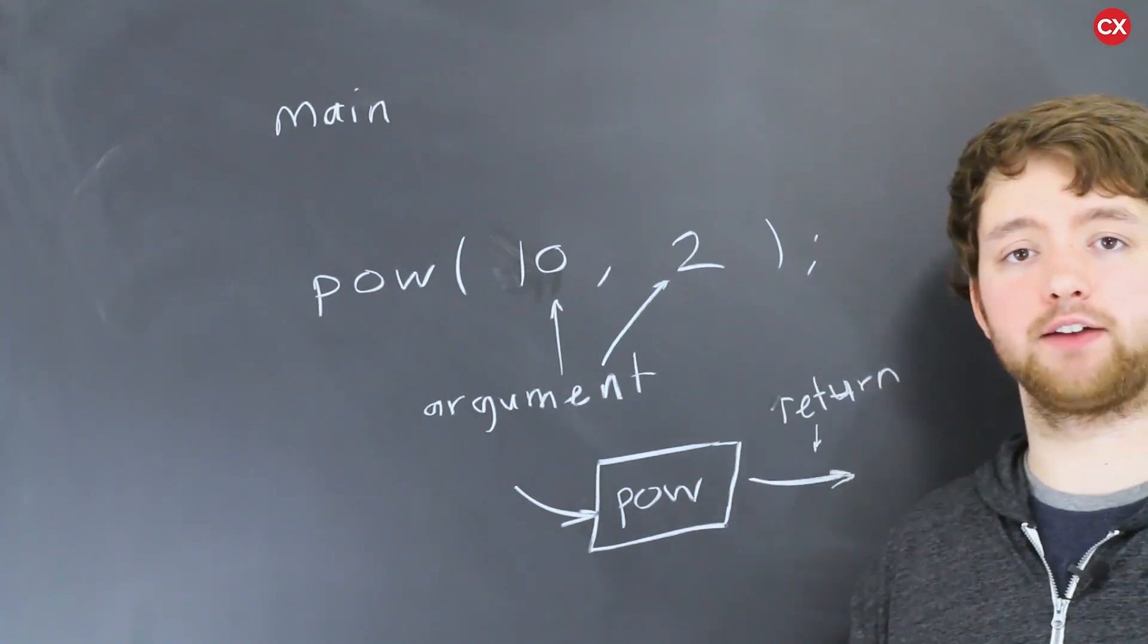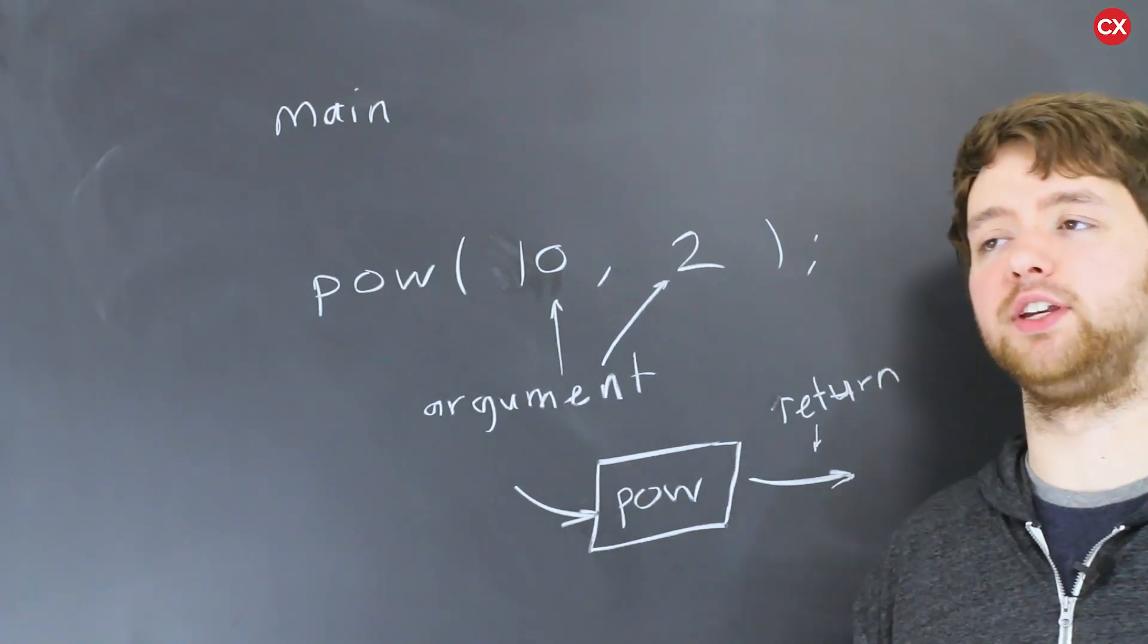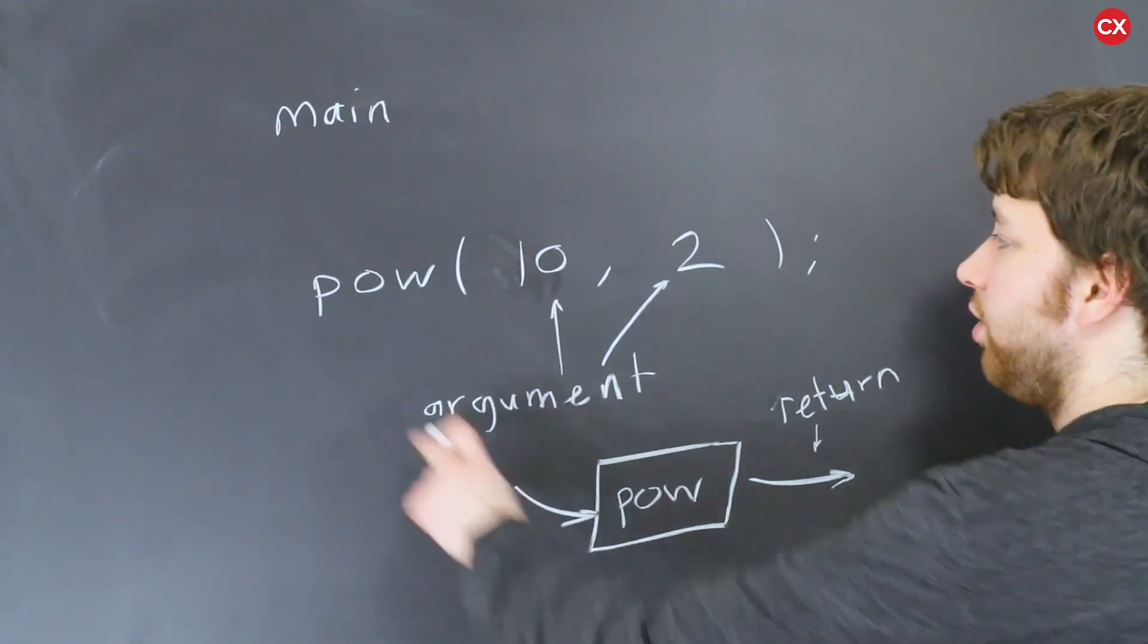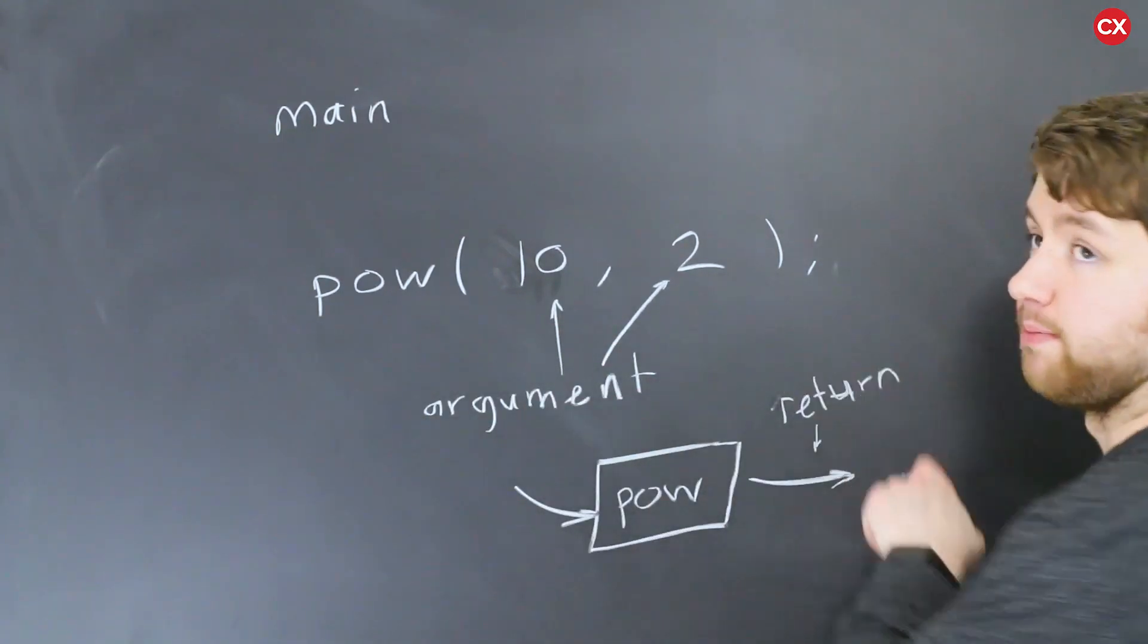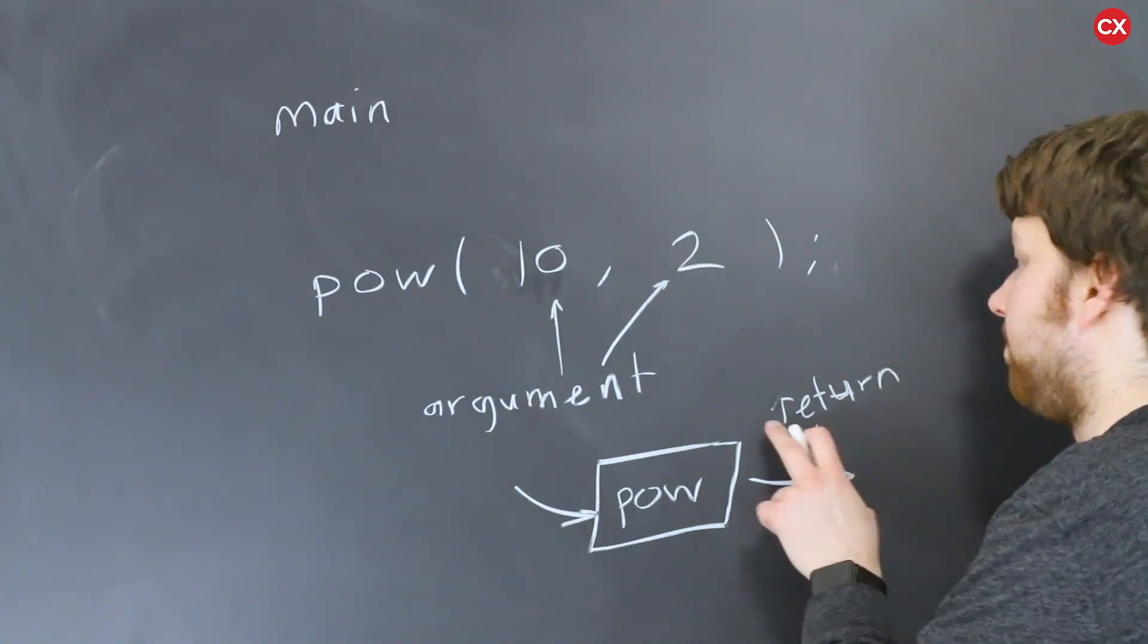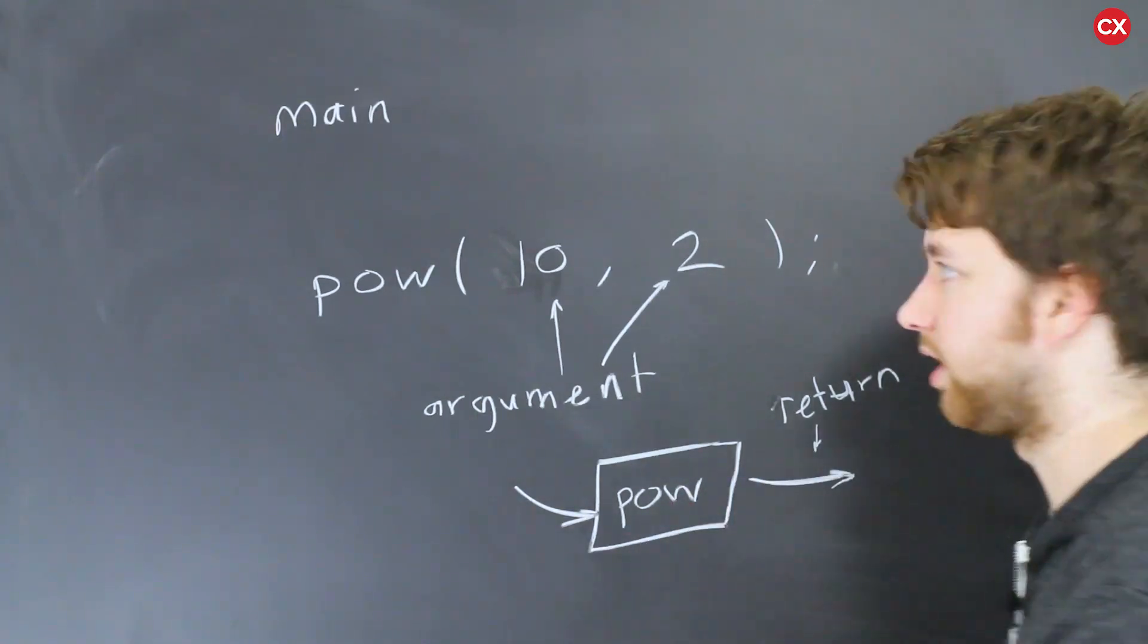If a function doesn't have a return, then it's probably doing something. It doesn't necessarily give us a value directly back. If that's a situation, you usually just call it and put a semicolon. More often than not though, you're going to want to grab that output. So you're not just going to put it like this, plain and simple. You're going to assign that to something.